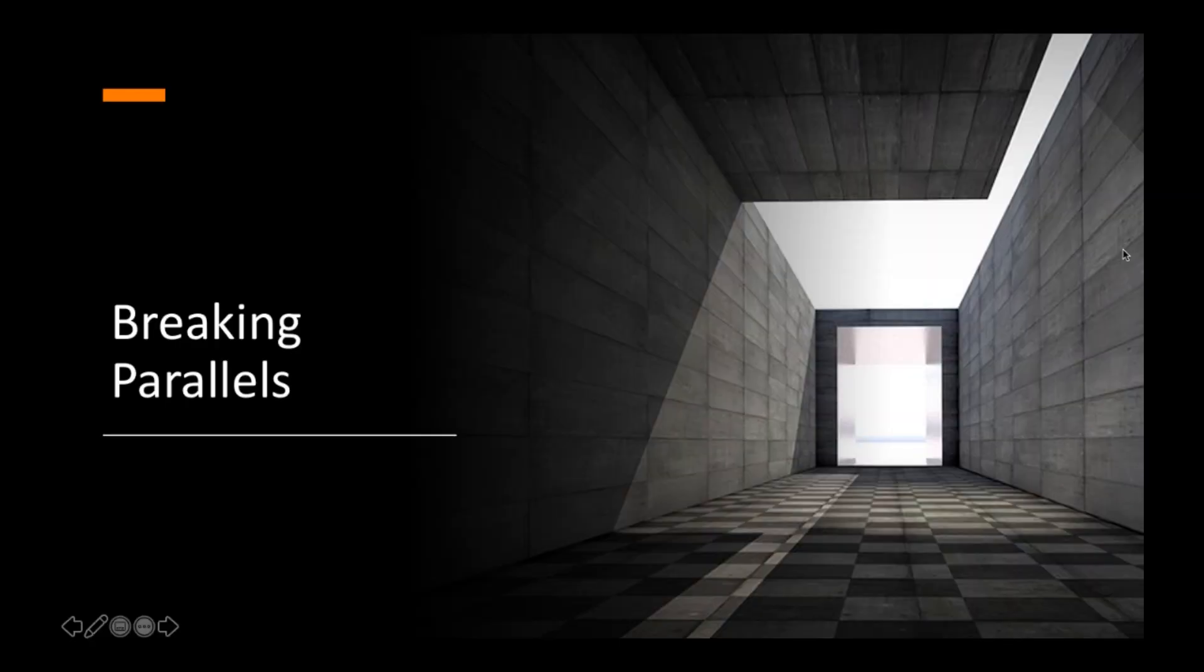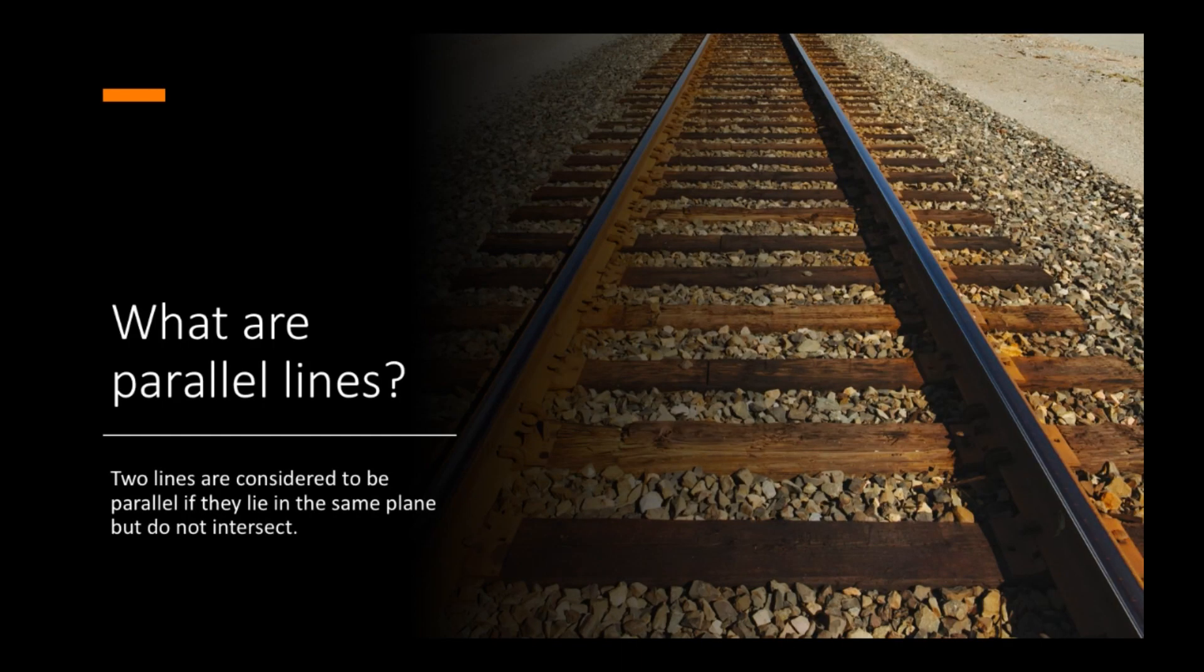We're going to talk about breaking parallels. So what is that, parallels? You can see there's a lot of parallels in this perspective photograph. What are parallel lines? Two lines are considered to be parallel if they lie in the same plane but do not intersect.